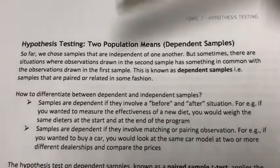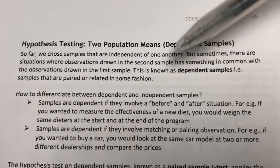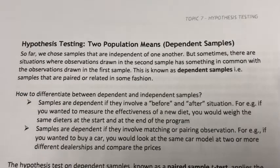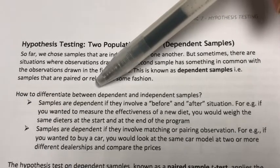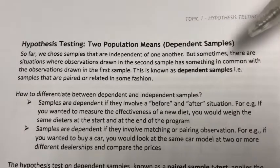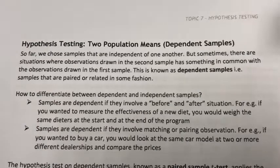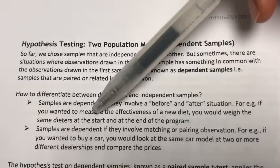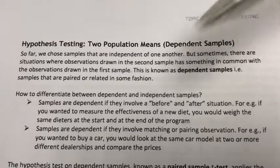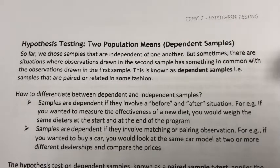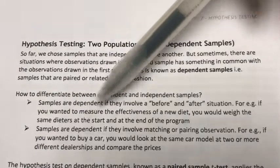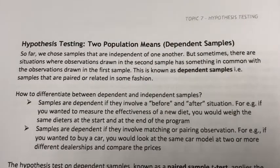So how can we differentiate between dependent and independent samples? There are several ways, but these are the most popular. First, samples are dependent if they involve a before-and-after situation. For instance, if you wanted to measure the effectiveness of a new diet program, we may measure the weights of participants at the start and at the end of the program — the participants are the same people, only their weights are shown in two different observations. Secondly, samples are also dependent if they involve matching or pairing observations. For instance, if you wanted to buy a car, you might look at the same car model at two or more different dealerships and compare the prices.